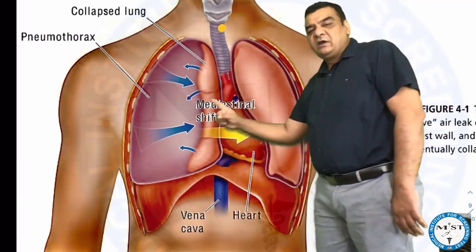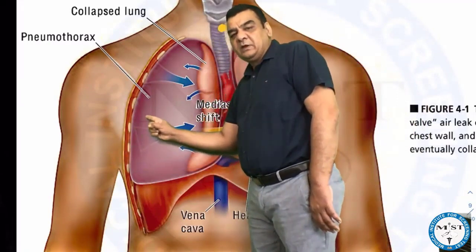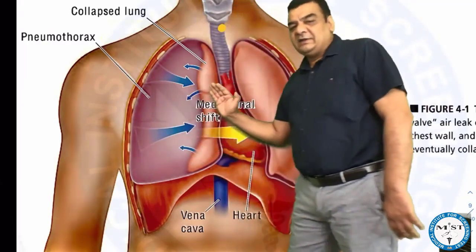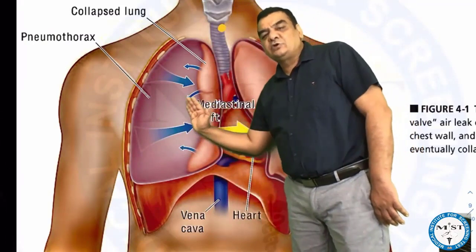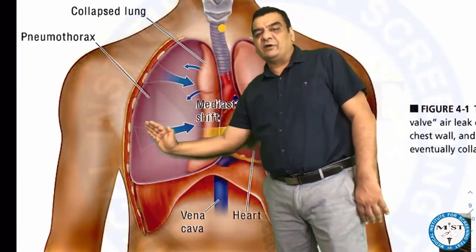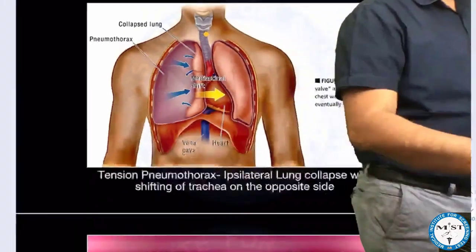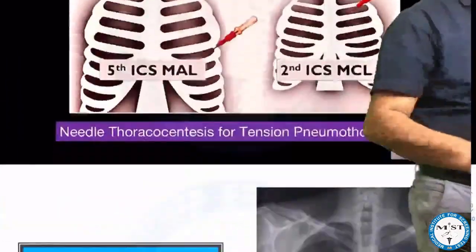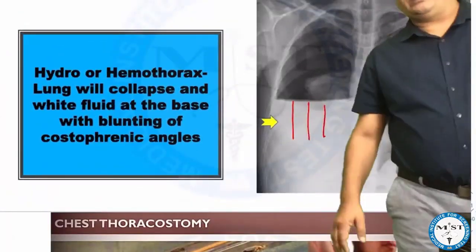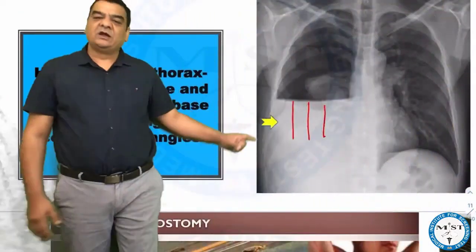The patient will be in respiratory distress. We have to immediately put a needle to drain all this air out so the lungs can expand and the breathing discomfort resolves. That is the concept in the management of tension pneumothorax.